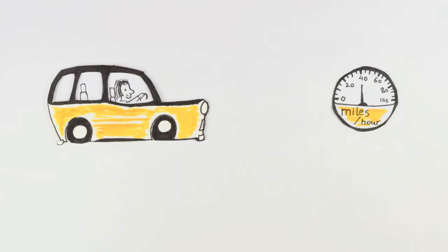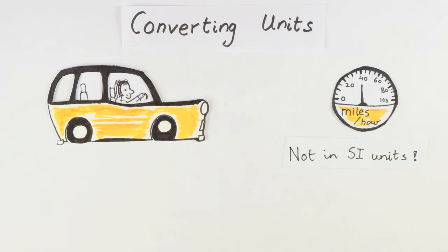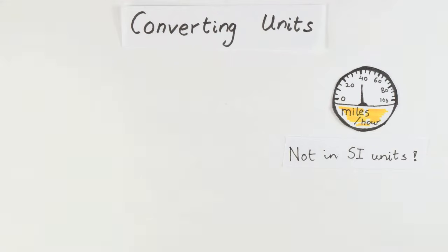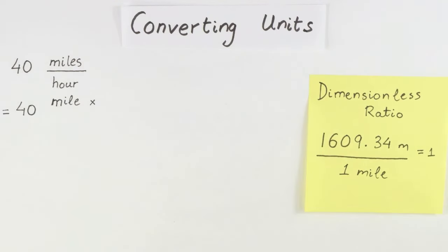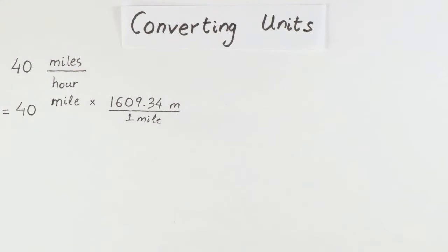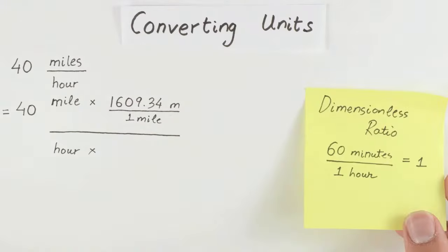We will frequently need to handle measurements expressed in units that are different from the SI system, so we'll need to be able to convert units. A good way to convert is to multiply by ratios of equivalent units, and then canceling like units until we obtain the measurement in the units we desire.